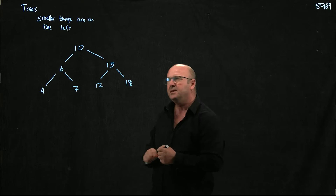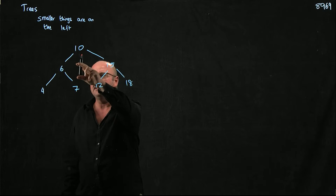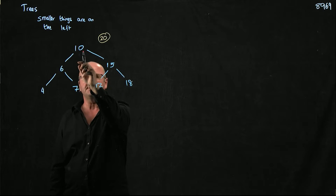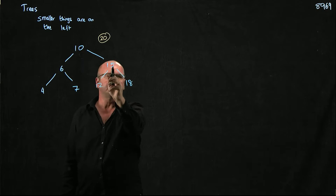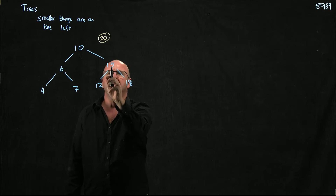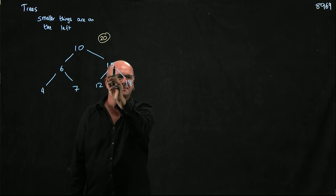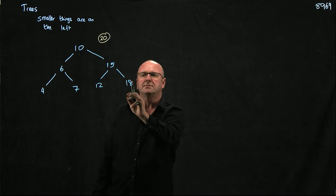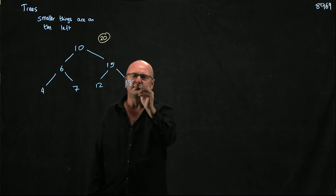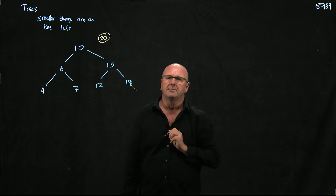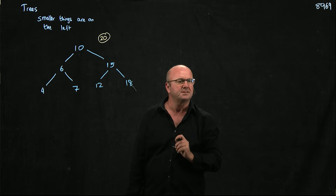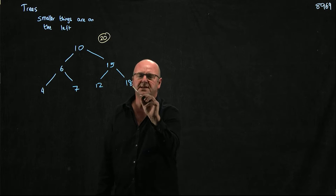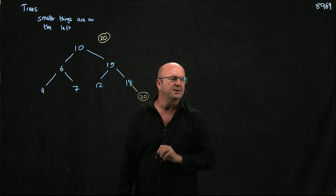When we want to add something to the tree, we start at the root. If we're going to add 20, is 20 bigger than 10 or smaller than 10? It's bigger, so we go to the right. Is 20 bigger than 15 or smaller? It's bigger, so we go to the right. 18's right-hand side pointer is pointing to null, so when we find a null, we create a node and put our 20 there.